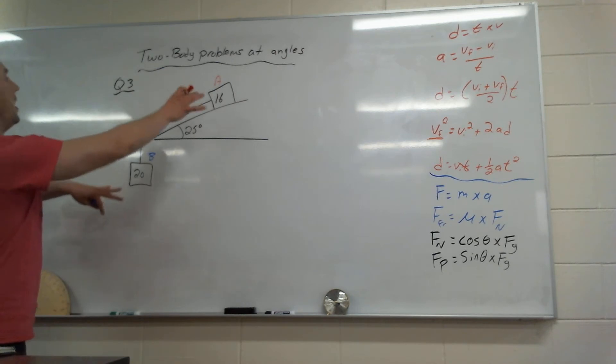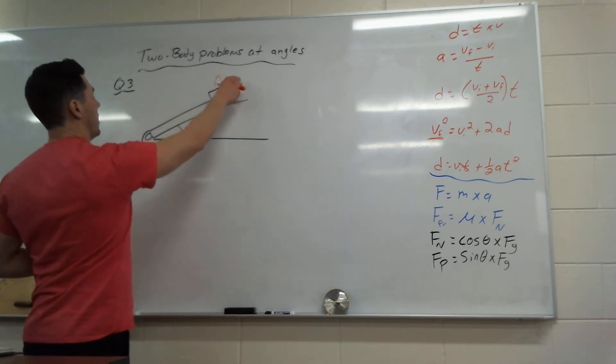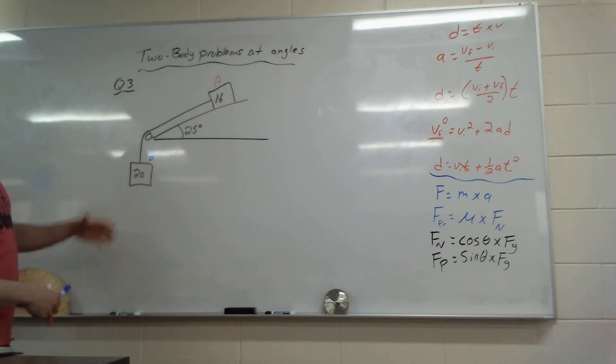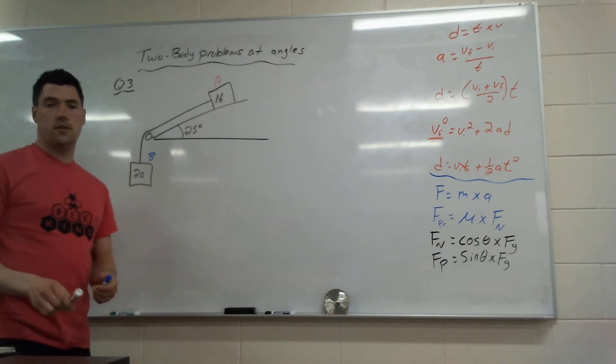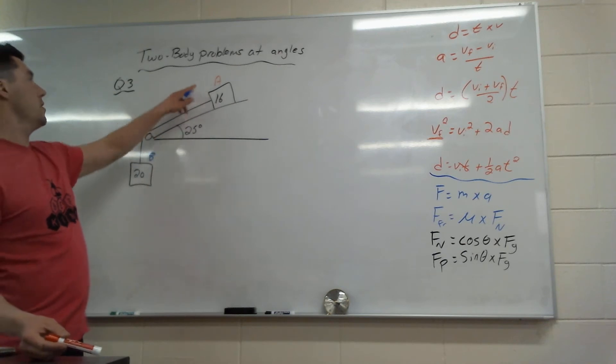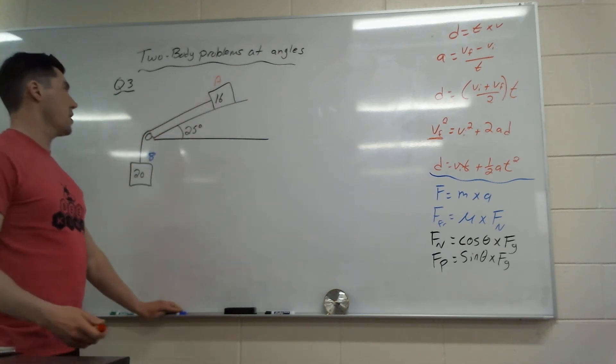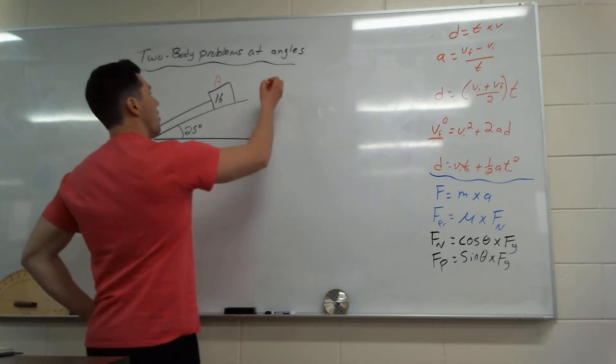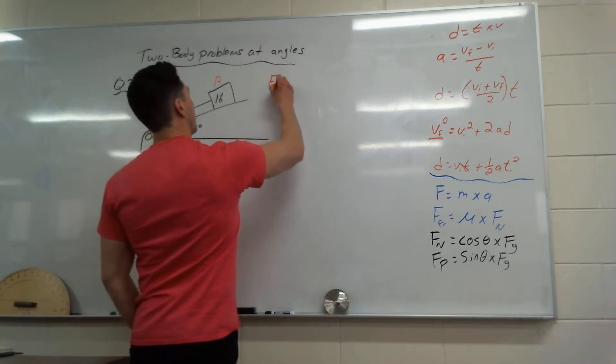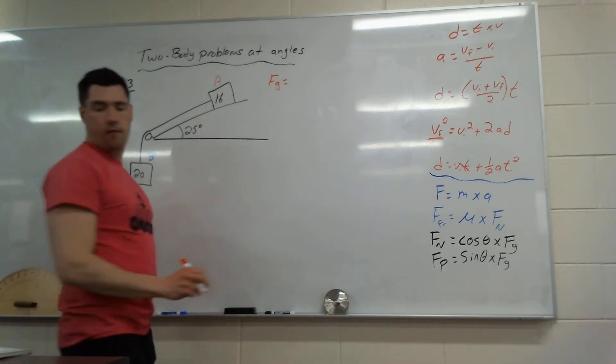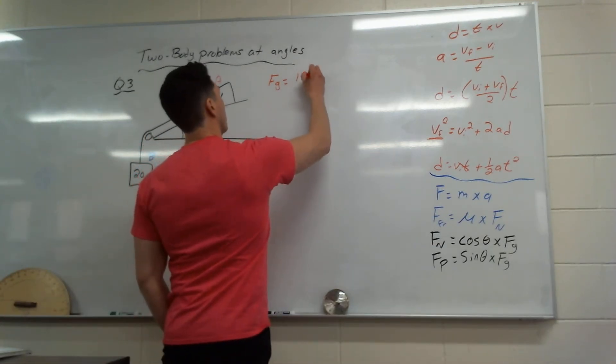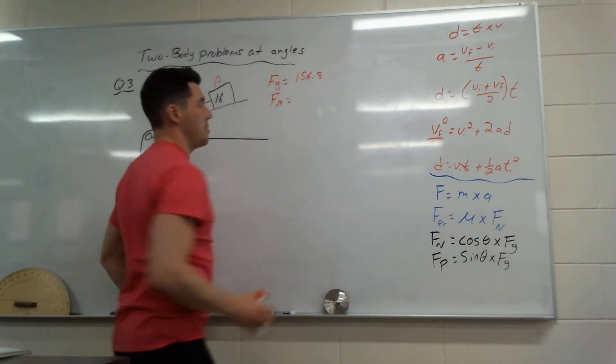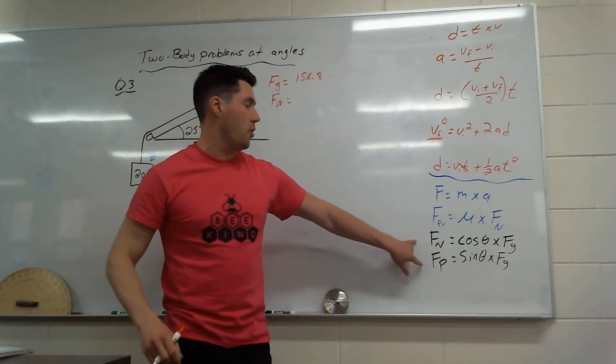So question three is set up like this. We have two masses, one 16 kilogram, and it's on a plane of 25 degrees, and then we have a mass of 20 just being suspended down. So let's break these apart. I have A in red, B in blue. Let's break apart our A block, our 16 here at angles. Force of gravity is going to be 16 times 9.8, and I get 156.8.